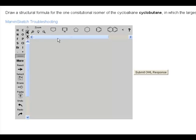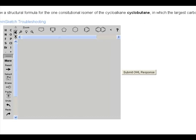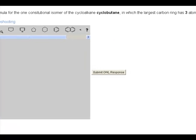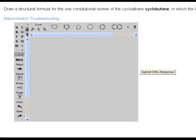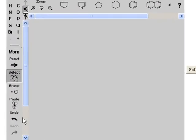So it reads: draw a structural formula for one constitutional isomer of the cycloalkane cyclobutane in which the largest carbon ring has three atoms. So I have to deal with four carbons because it's cyclobutane—butane implies four.